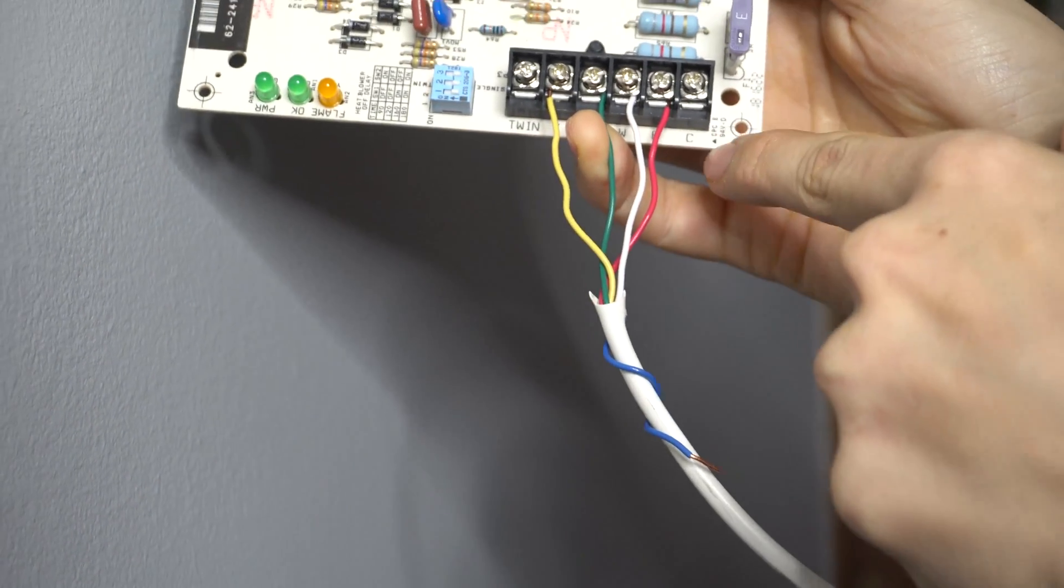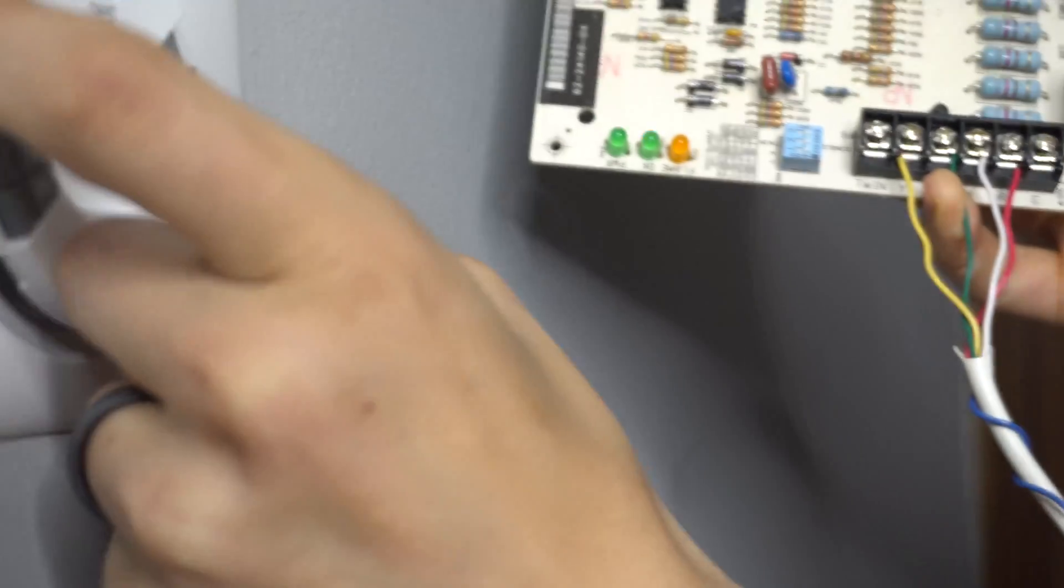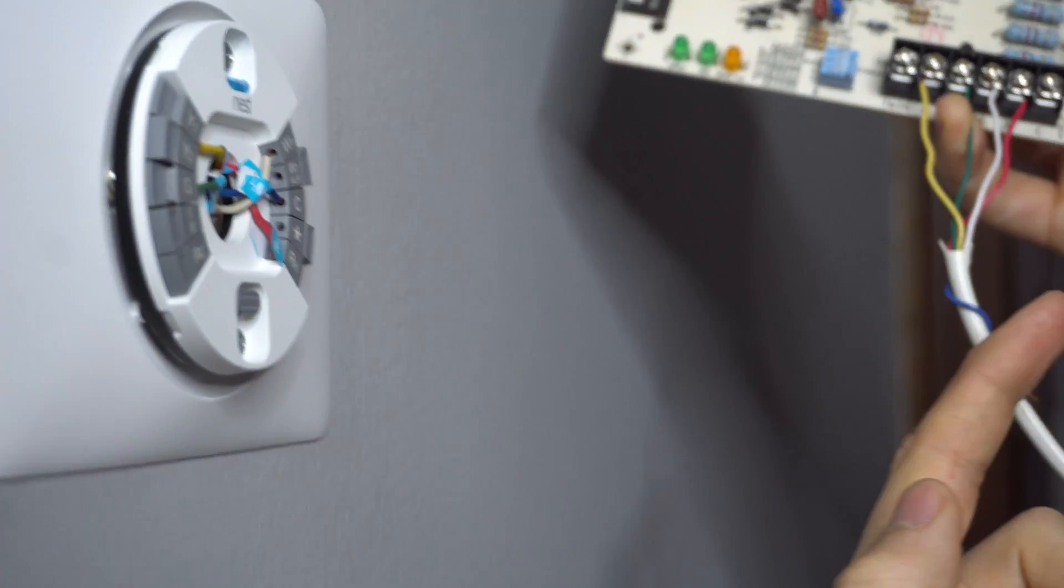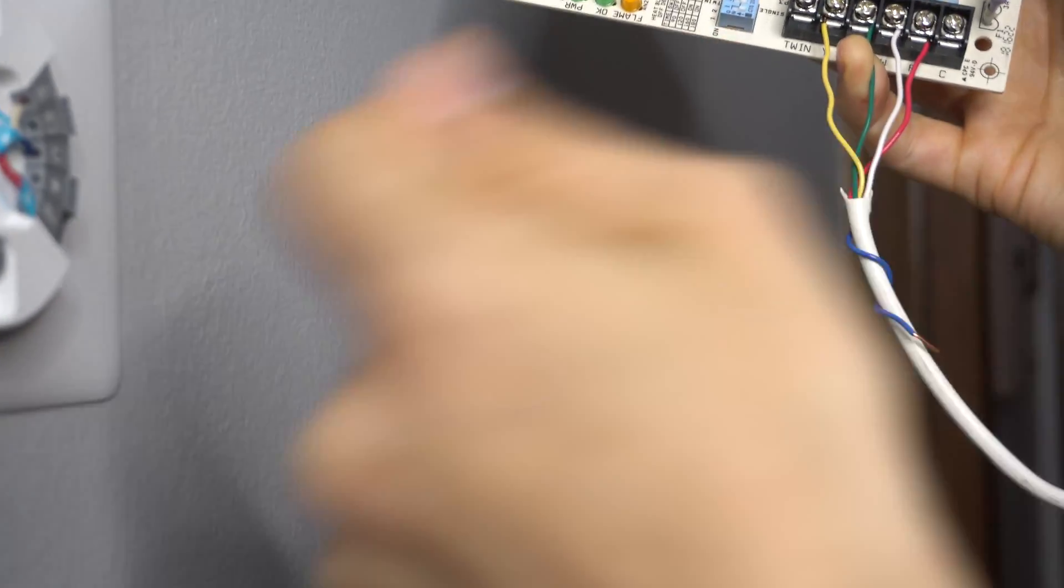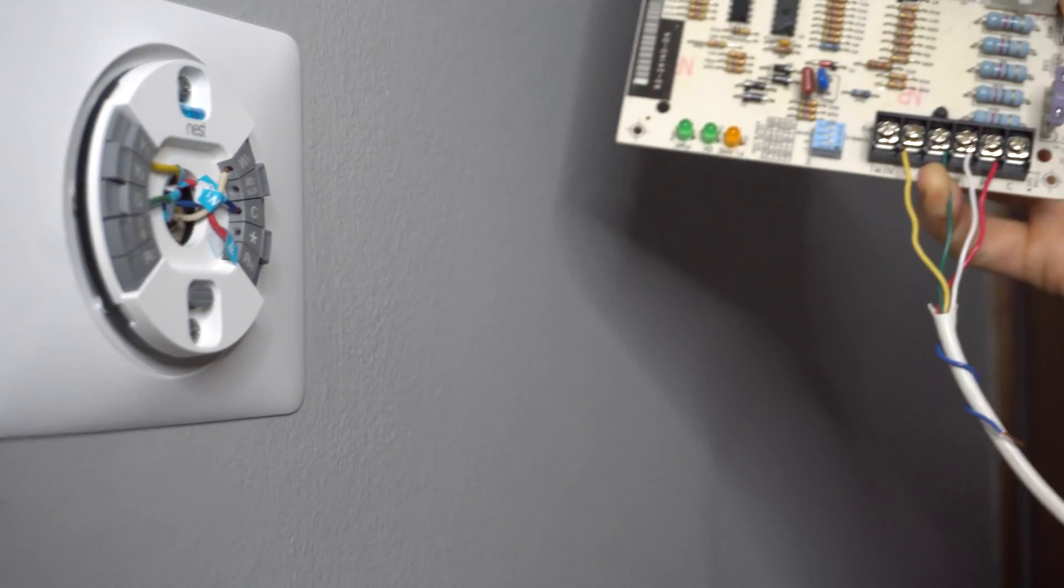That means you actually do have a fifth wire, and you can use this fifth wire as your common. So you would take this wire and hook it up into your C. And then you would go to your thermostat, pull it off the wall, and then pull that whole wire out, and most likely that blue wire will be there as well. You take that out, strip it if you need to, and plug it into the common. So that's method number two.